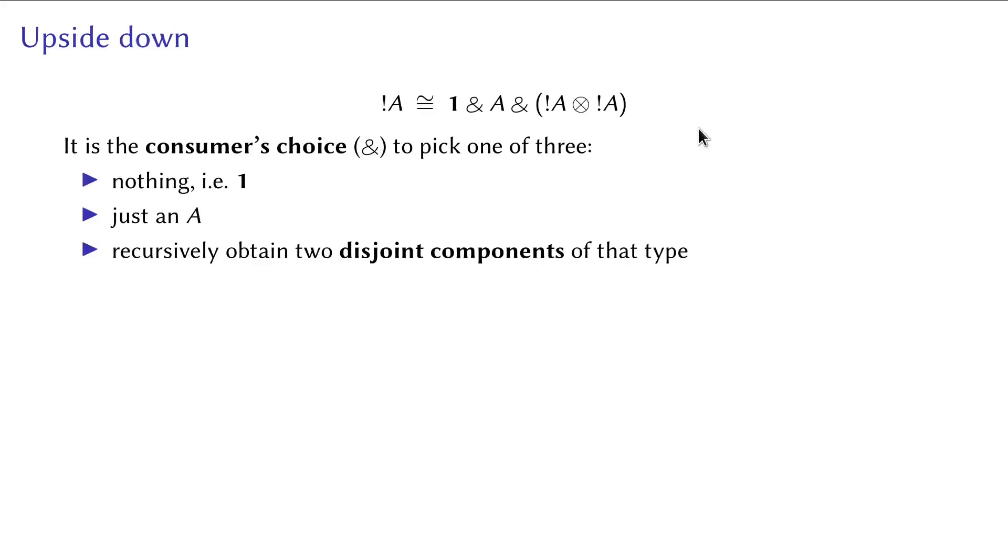Let's compare the two sets of modalities. In the encoding of exponentials, a server is either nothing, a single A, or two sub-servers connected by a tensor. Remember that tensor represents disjoint components, so there can be no communication between the two sub-servers. Hence, it cannot be a stateful server.